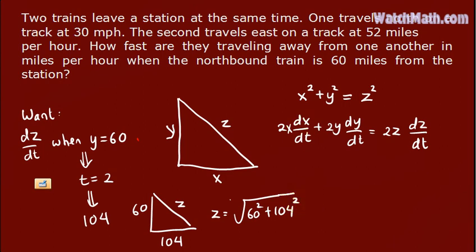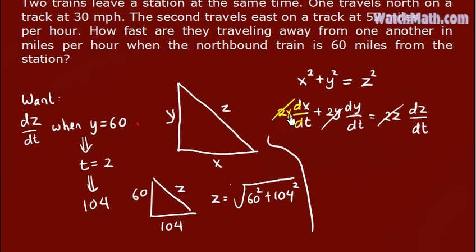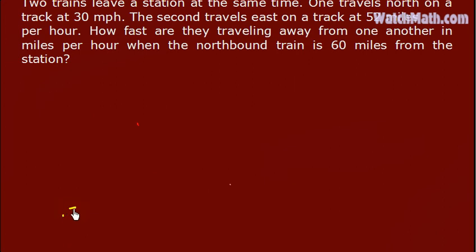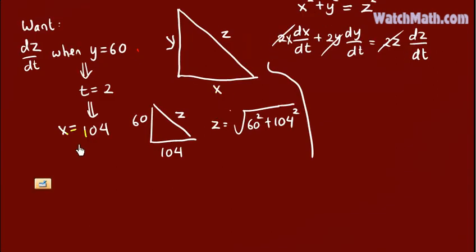Plug in all information here. We can cancel the twos. Plug in X equals 104. dX/dt is the speed of the eastbound train, which is 52.